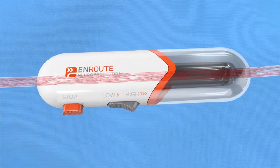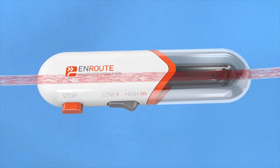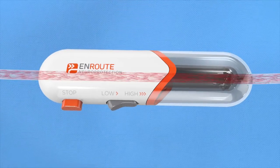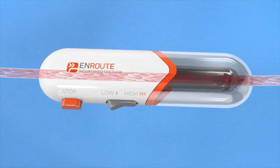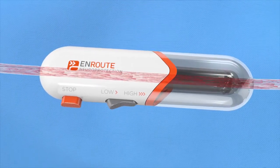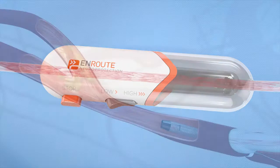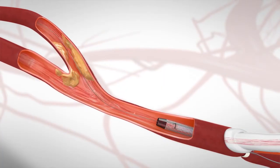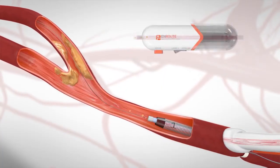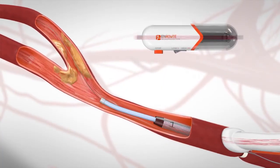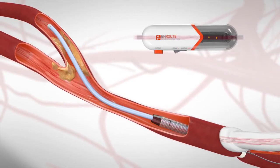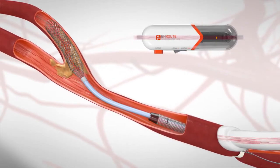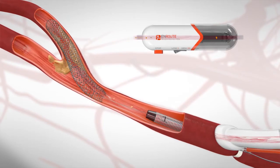Clinical studies have shown this temporary redirection of blood flow is not problematic because the brain is fed by multiple arteries, which maintains cerebral blood flow throughout the procedure. The enroute transcarotid neuroprotection system provides operator control over the blood flow rate throughout the procedure. With flow reversal established, the conformable enroute transcarotid stent is placed to stabilize the plaque against the wall of the artery and minimize the potential for a future stroke.